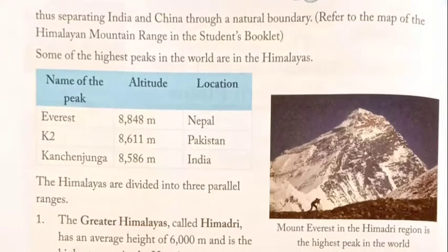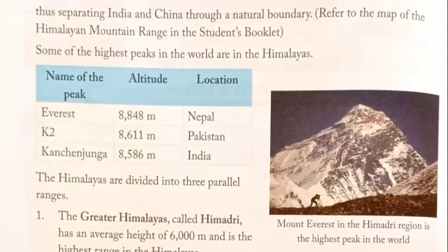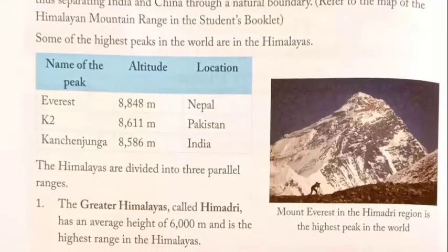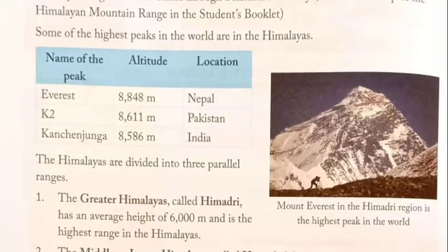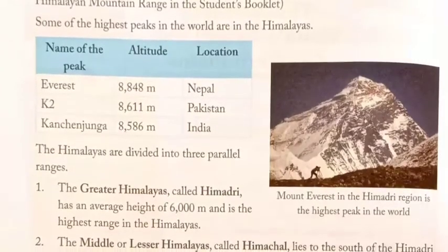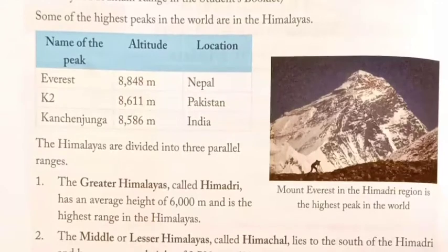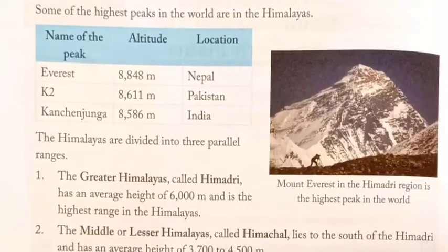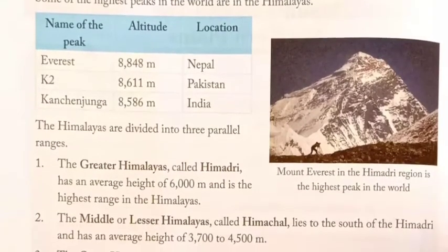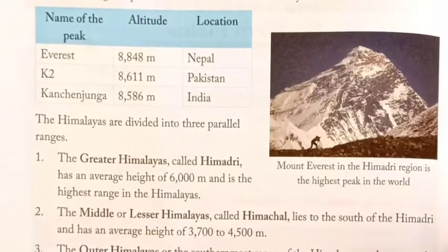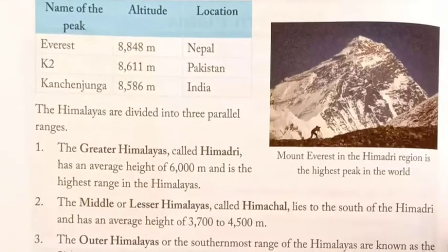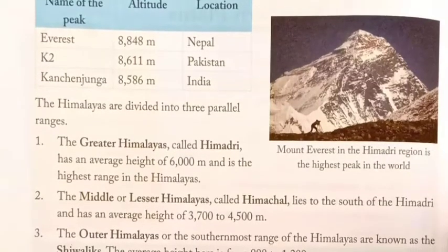Refer to the map of the Himalayan mountain range in the student's booklet. Some of the highest peaks in the world are in the Himalayas. First, Everest — altitude 8,848 m, located in Nepal. Second, K2 — altitude 8,611 m, located in Pakistan. Third, Kangchenjunga — altitude 8,586 m, located in India.